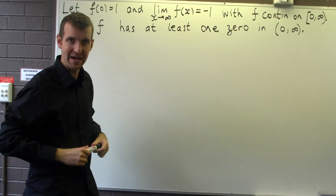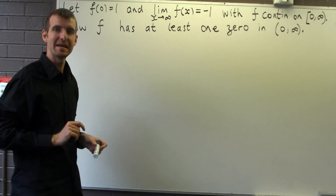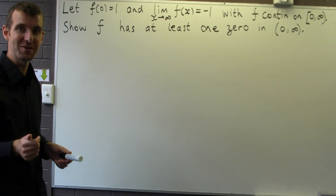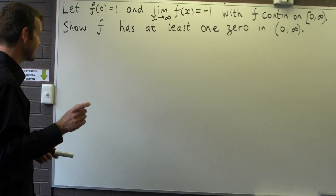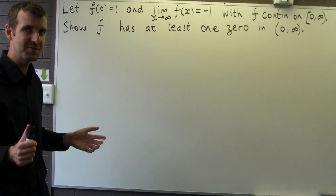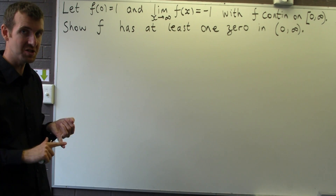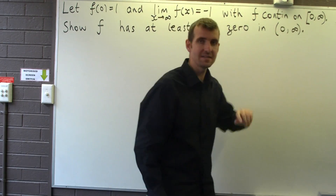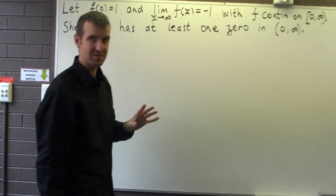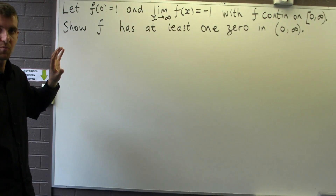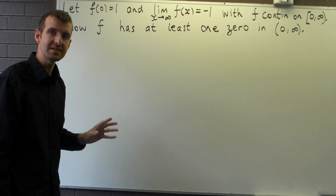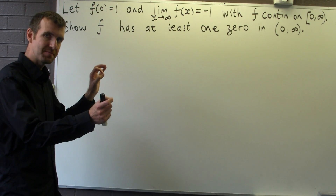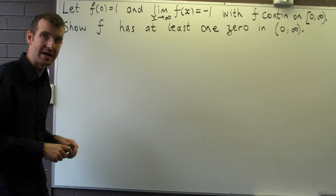So how do we do that? Well, basically it involves an application of the Intermediate Value Theorem, IVT. Now the IVT involves a few things. Continuity is critical. We know that f is continuous, so that's good. And we also need to choose an interval where at the endpoints, f has opposite signs.